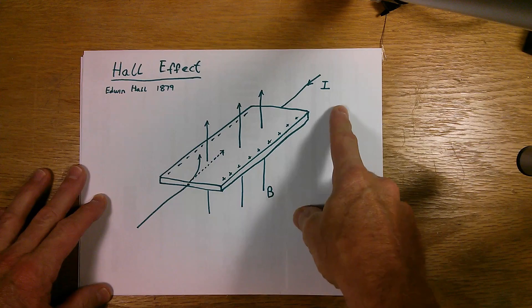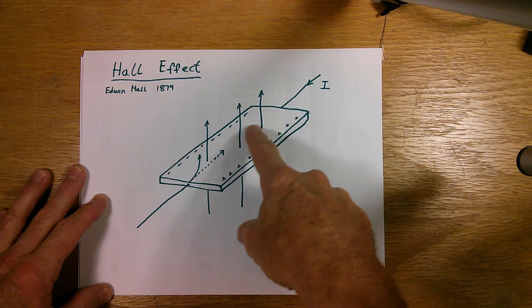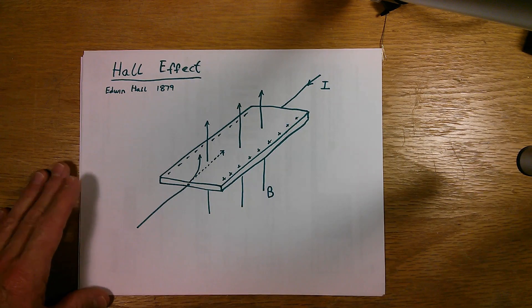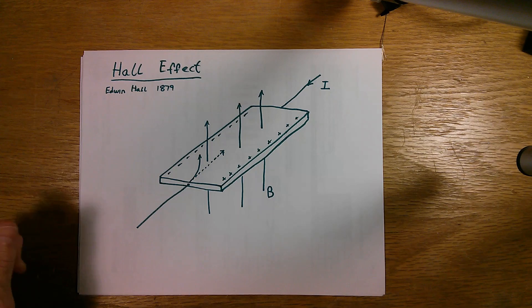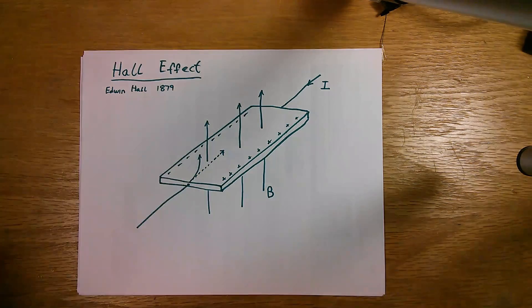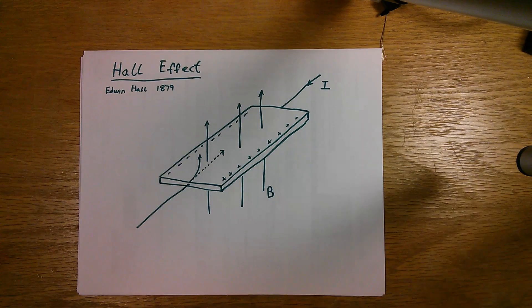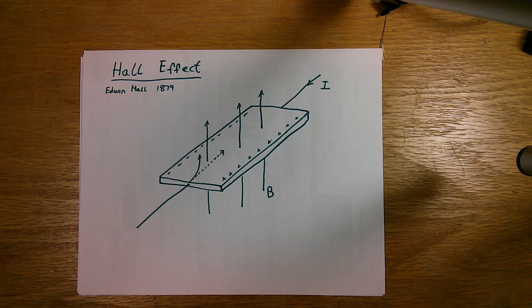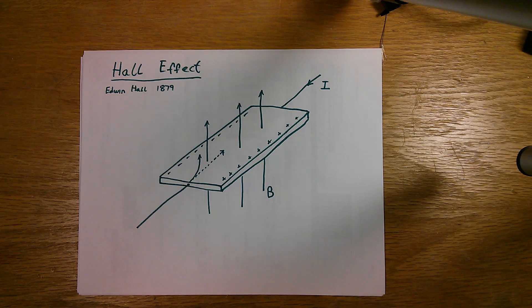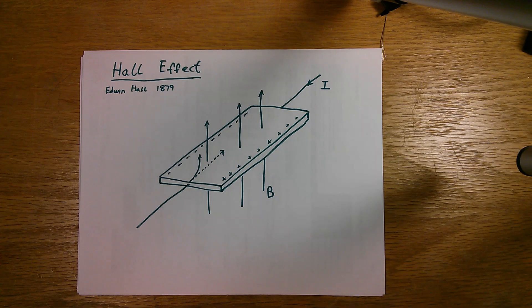So if we set up a current here, this is conventional current flowing in this direction. What I mean by conventional current is at some point in the history of electricity, somebody decided that current was going to flow from the positive to the negative. And what's actually flowing in a circuit, in a wire or whatever it is, is electrons, which are negatively charged.